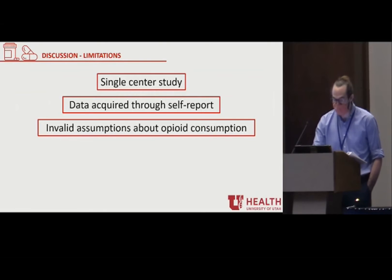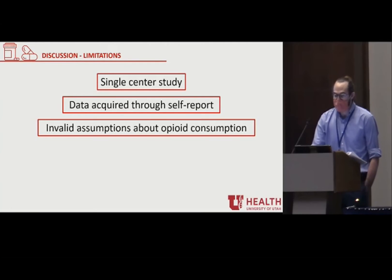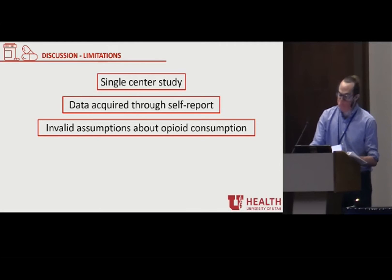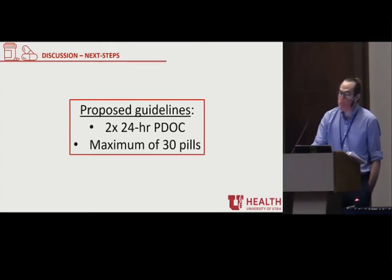This study does have several limitations. It is a single-center study, and patients may receive and take opioids differently at other centers. The data on consumption was also acquired through self-report, which may introduce social desirability bias. It may also be an invalid assumption that opioid consumption would be constant across all scenarios — we know that if we prescribe patients fewer opioids, they take fewer opioids. The next step is to actually prescribe to patients in this manner, which we've already started, nearly completing data collection over a six-month period. Proving viability in a pilot study would allow for a larger trial and could greatly reduce the number of pills surgeons prescribe, limiting our impact on the opioid epidemic.